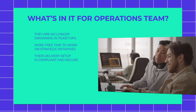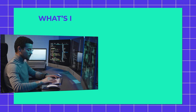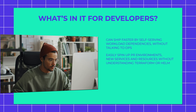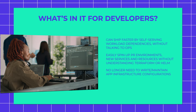Change failure rate drops, and all your data metrics improve across the board. For developers, they can now ship faster by self-serving their workload dependencies without talking to ops. They can easily spin up PR environments, new services, and resources without having to understand Terraform or Helm. They no longer need to write and maintain app and infrastructure configurations on their own.